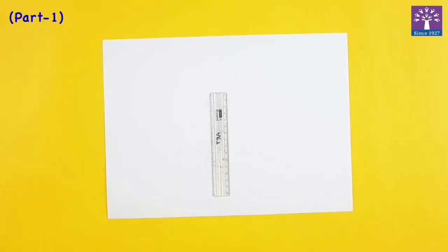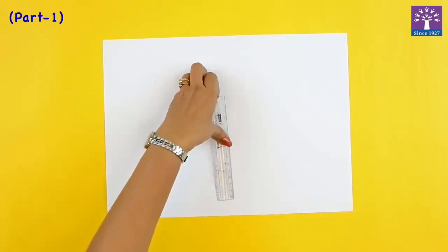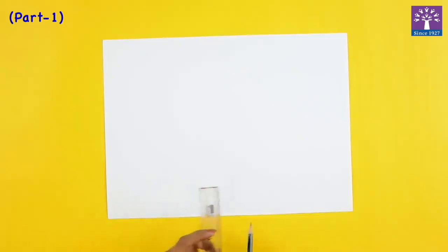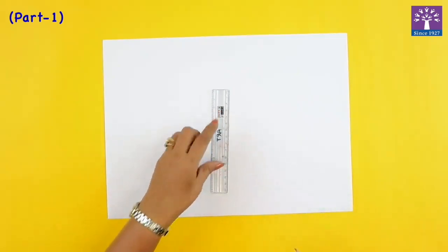So your art teacher must have kept some geometrical shapes like a cuboid or a pyramid or a sphere in front of you in the classroom. You will observe and draw the different 3D shapes and here I'm drawing a cuboid.